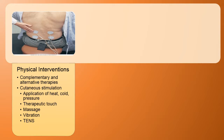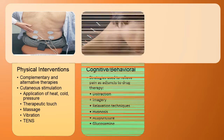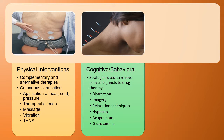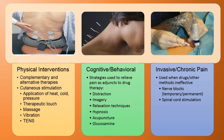Other methods to assist with pain include physical interventions such as complementary and alternative therapies, cutaneous stimulation, application of heat, cold, pressure, therapeutic touch, massage, vibration, and TENS units. Cognitive and behavioral interventions used as adjuncts to drug therapy include distraction, imagery, relaxation techniques, hypnosis, acupuncture, and glucosamine. Invasive procedures for chronic pain — used when drugs or other methods are ineffective — include nerve blocks or spinal cord stimulation.